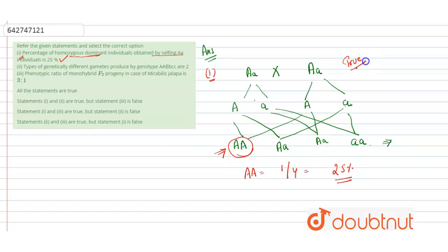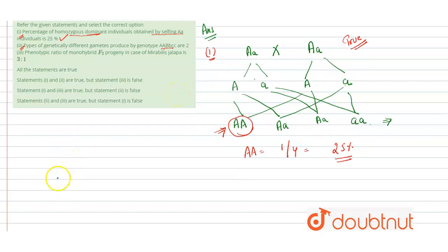So the first statement is true. Now we take the second statement: types of genetically different gametes produced by the given genotype are two. We need to find the gametes produced by this genotype, which is capital A small b — written as AAbb.